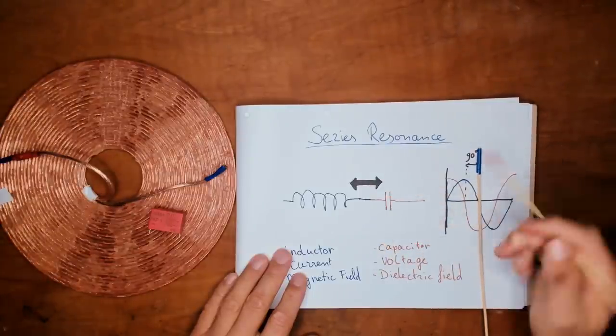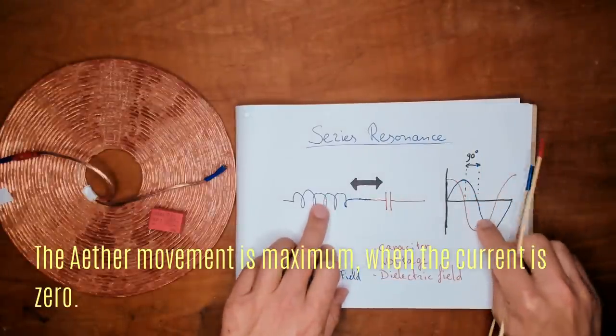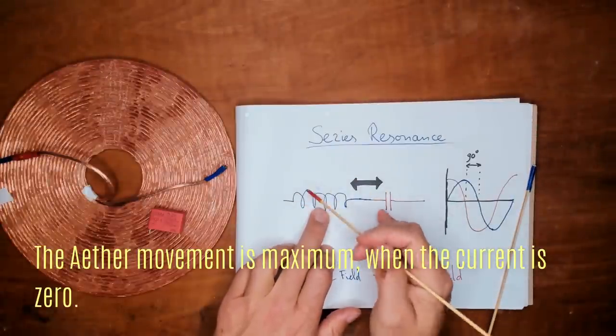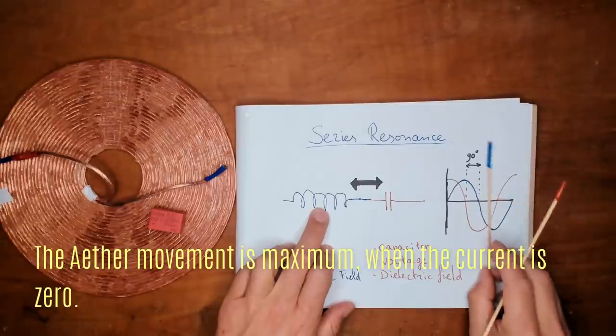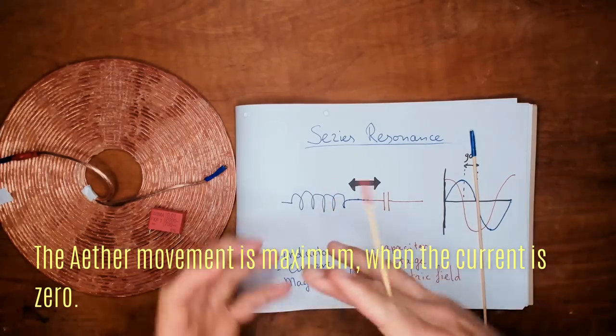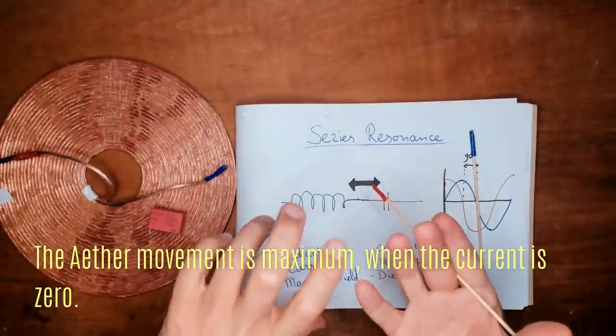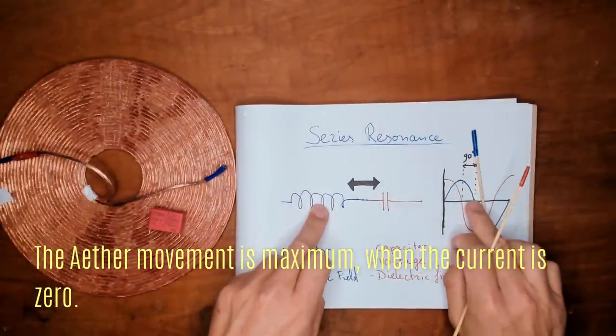But keep in mind this is a changing magnetic field. So the change of flux of the magnetic field lines is maximum when the current is zero. So the change in the magnetic field from one to the other is maximum when the current is zero.